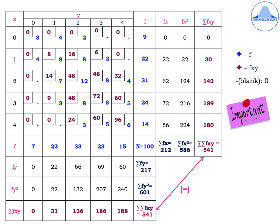Now for the rows: the fy values are obtained by multiplying each frequency by its corresponding y value — 7 times 0 is 0, 22 times 1 is 22, 33 times 2 is 66, 23 times 3 is 69, 15 times 4 is 60 — giving summation fy equals 217. The fy-squared values are 0, 22, 132, 207, 240, giving summation fy-squared equals 601.